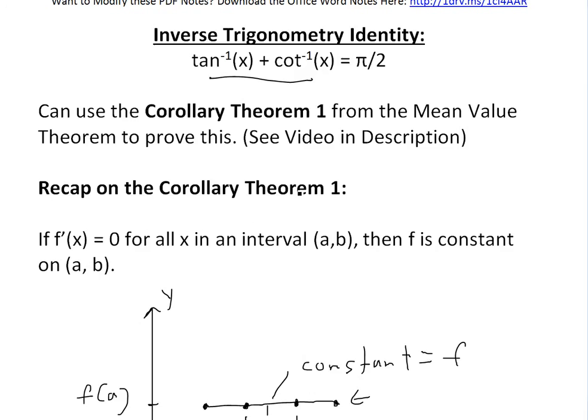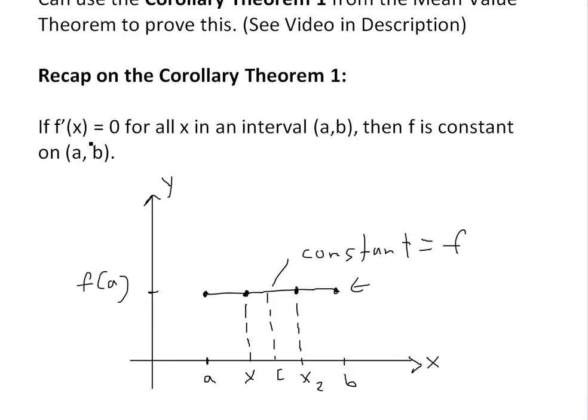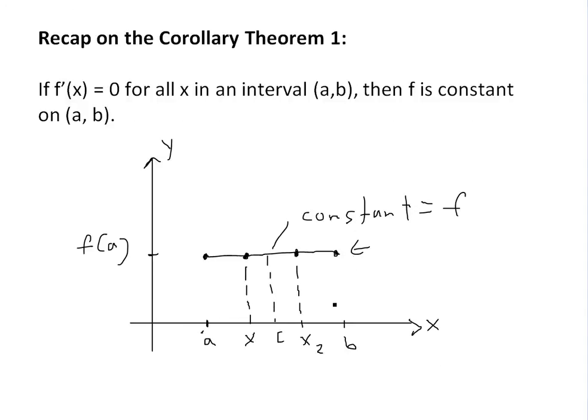I'll just quickly recap on that theorem, which is pretty straightforward. Basically, if the derivative is 0 for all x in an interval (a,b), then f is constant on (a,b).